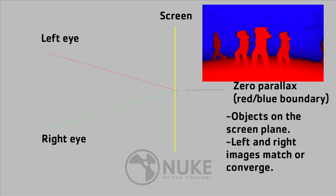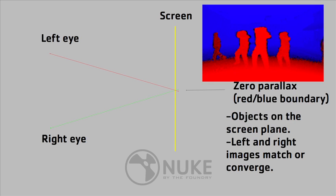The screen plane is zero parallax, which is on the boundary between the red and blue in the picture. Objects at that point seem to be on the screen plane, and if you were in a comp sliding your left image over your right image, the convergence points would be where the images line up with each other. Stuff in front of the screen corresponds to the red pixels here on the disparity mapping — negative parallax, where the right eye pixel is to the left of the left eye pixel.